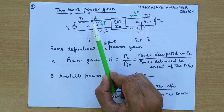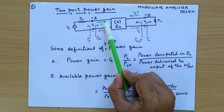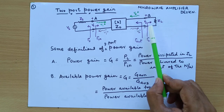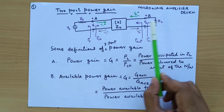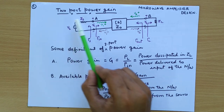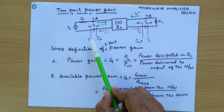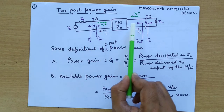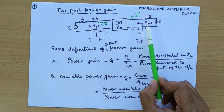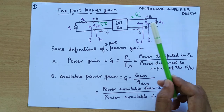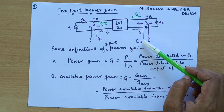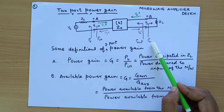At point A, the total voltage is V1, which is the summation of V1 plus and V1 minus. When we look into the source network, the reflection coefficient is gamma_S. When we look into the network, the reflection coefficient is gamma_in. Similarly, at the output port at point B, when we look into the network, the reflection coefficient is gamma_out. When we look towards the load, the reflection coefficient is gamma_L.